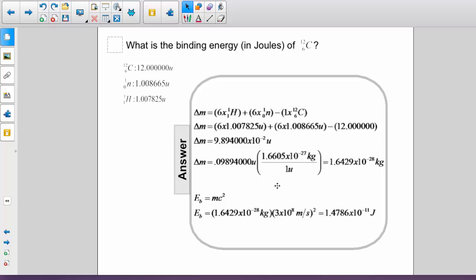To find the binding energy, we need to multiply that mass defect by the speed of light squared. So we get the binding energy equals our mass defect in kilograms multiplied by 3 times 10 to the 8 meters per second squared.